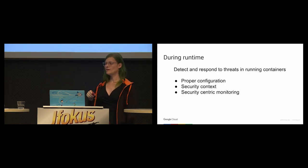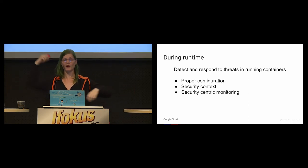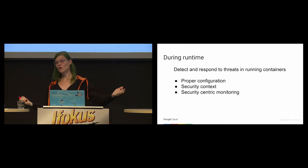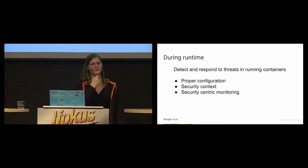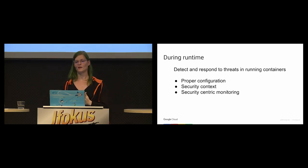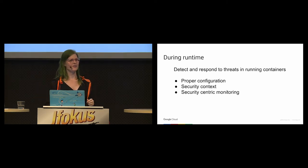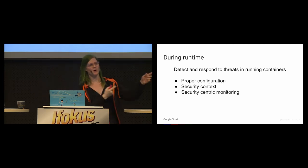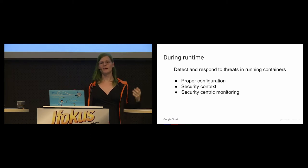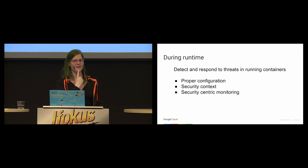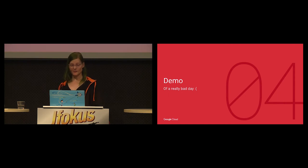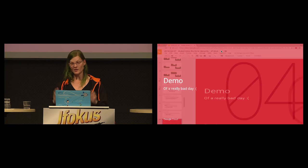I'm focusing on runtime security — dealing with problems during actual physical operation time. When running containers, things will inevitably go wrong. We want to mitigate damage through proper configuration, which is the lowest hanging fruit: actually turning on security features and using them. Beyond that, we can take advantage of the security context of the OS, kernel, and containers themselves. And there's a new emerging area of container-aware security monitoring that can automatically mitigate problems using those APIs.